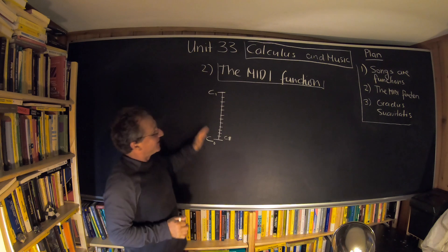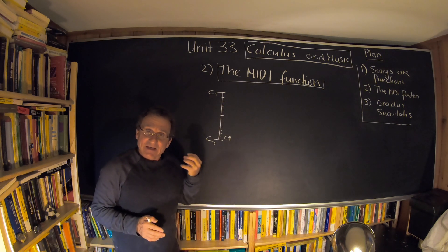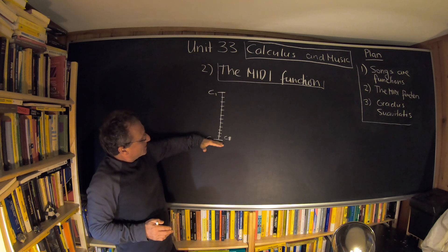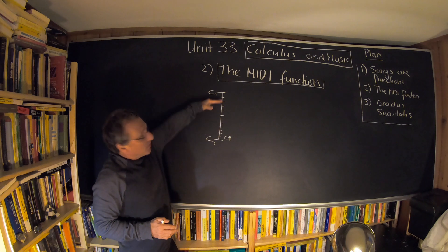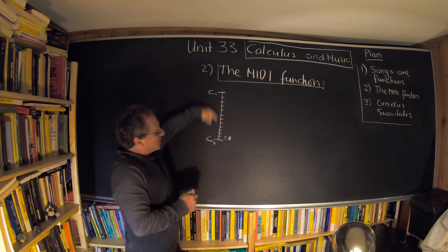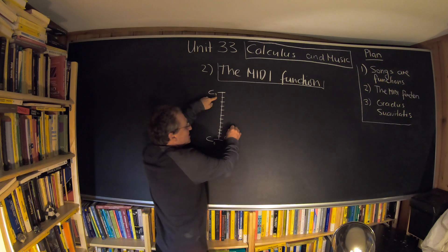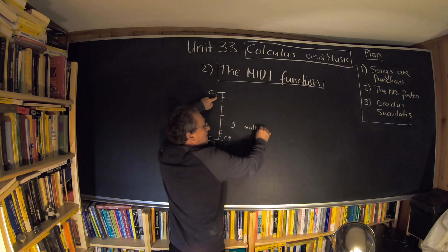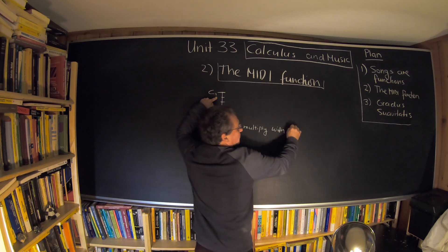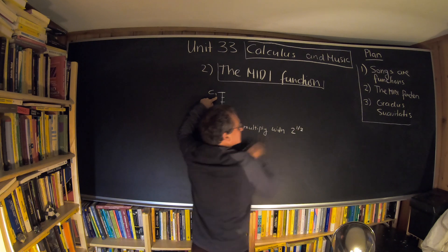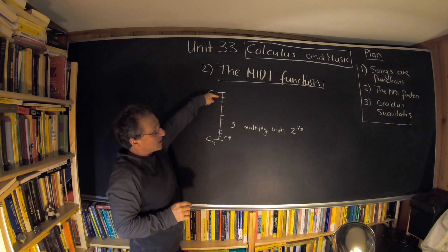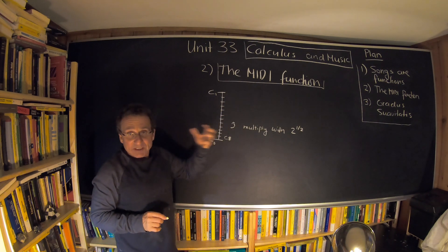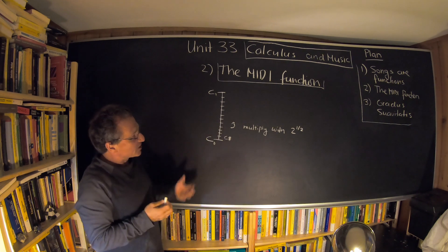There's a funny thing happening in music: we listen logarithmically. The scale which we think is linear — going up one octave — is actually a doubling of frequency. Every step is multiplication by the twelfth root of two. If you do that 12 times, you end up with a factor of two. This is encoded in what I call the MIDI function — a relation between the musical scale and frequency.